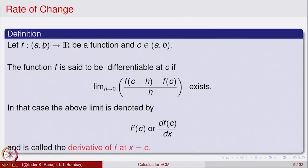To make it more precise, let us state the definition. Let f be a function from (a, b) to ℝ, and let c be a point inside (a, b). We purposefully take an open interval so that c plus h — whether h is positive or negative — also belongs to (a, b). We look at the change f of c plus h minus f of c divided by h, and take the limit as h goes to 0. If this limit exists, we say the function has a derivative at x equal to c, denoted f′(c) or df/dx at c.